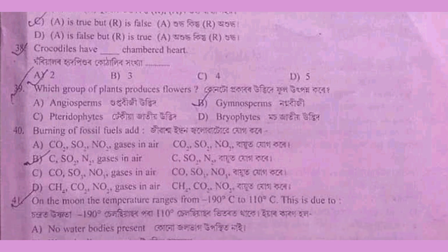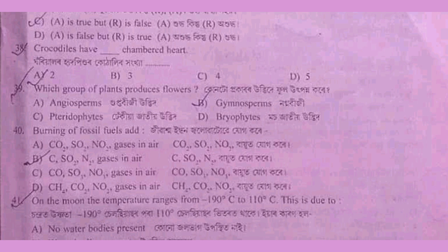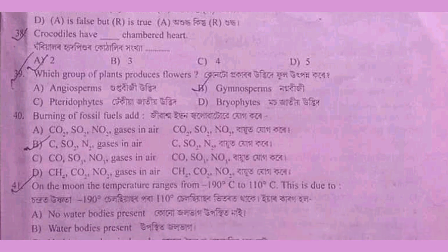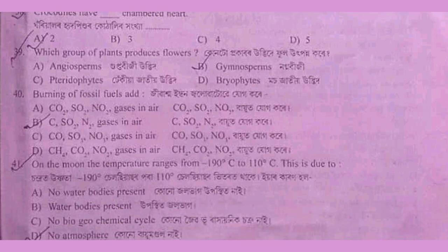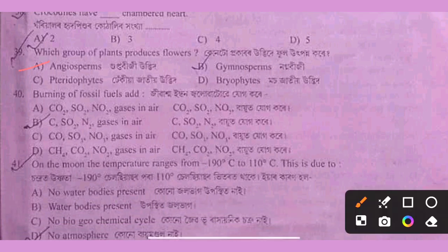Question 39: which group of plants produces flowers? The answer is angiosperms. Option A.